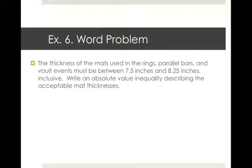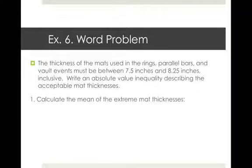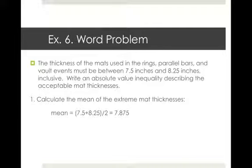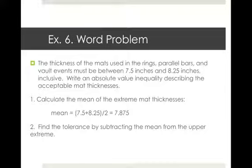One more example. The thickness of mats used in rings, parallel bars, and vaults must be between 7.5 inches and 8.25 inches inclusive. Write an absolute value inequality describing the acceptable mat thicknesses. Because we're given the extremes, first find the mean: (7.5 plus 8.25) divided by 2 equals 7.875 — that's the ideal thickness. Then find the tolerance by subtracting the mean from the upper extreme: 8.25 minus 7.875 equals 0.375.